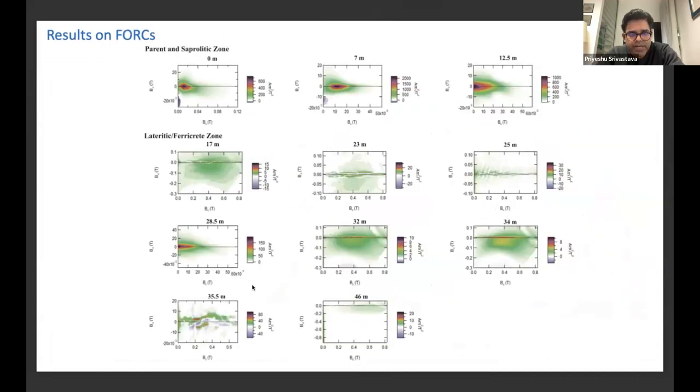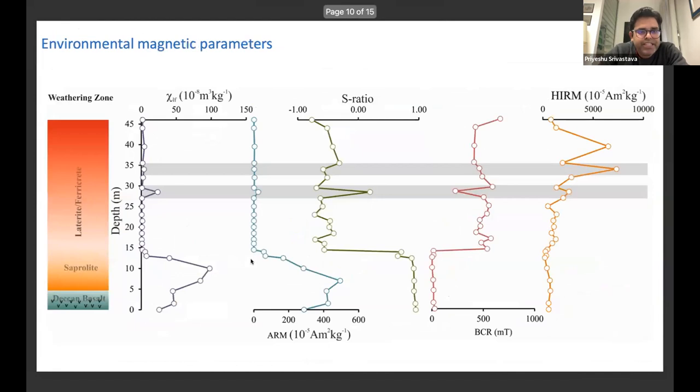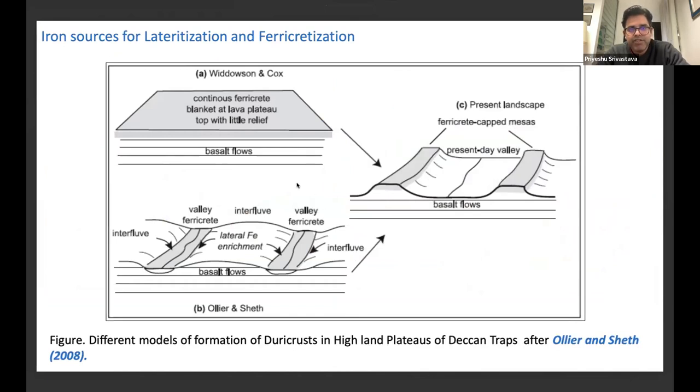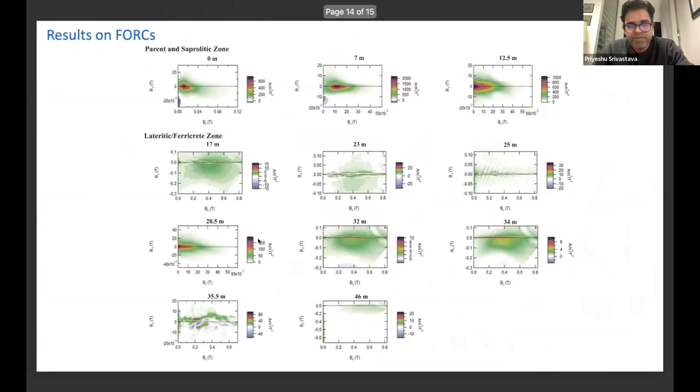To conclude, our preliminary data is that most of the behavior of ferricrete zone is quite distinct, where we can see there are some samples where we have this accumulation of ferrimagnetic as well as antiferromagnetic minerals, and at some levels where we lose all these signatures. So probably, to conclude my findings, is that while the vertical migration of iron oxide was happening during the intense weathering, we also see the enrichment of lateral enrichment of iron through the interfluvial model. Thank you.